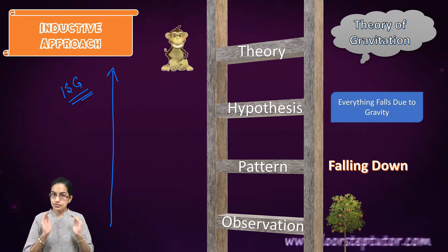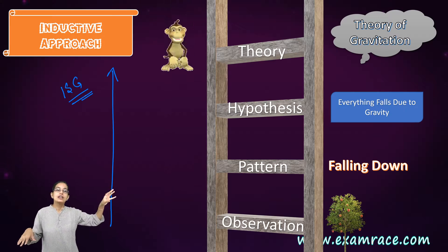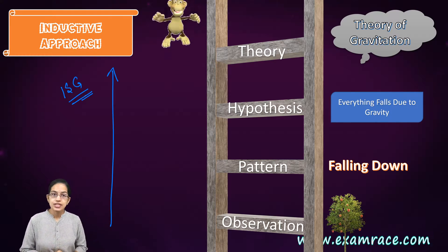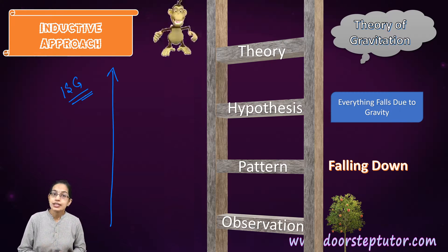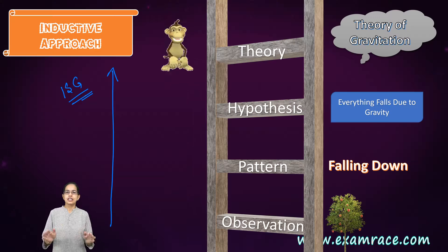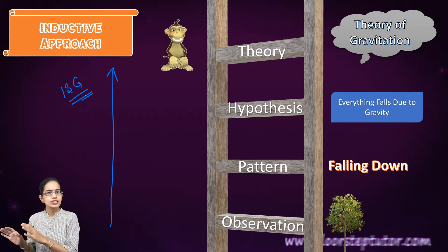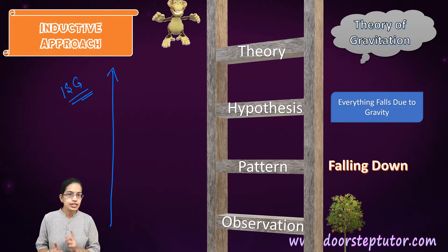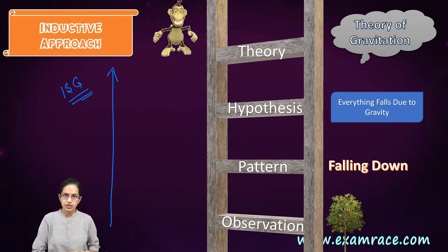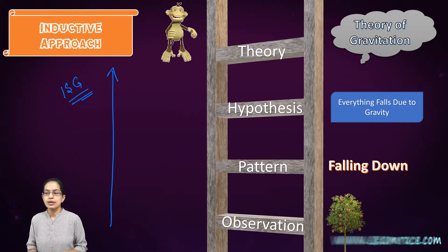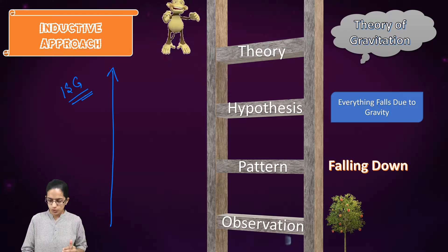With the same example, the deductive approach can work in two ways. Once the theory of gravitation is established through the specific-to-general inductive process, that generalized theory can be applied to other cases — that would be an example of the deductive approach. In certain scenarios, there could also be a case where no prior inductive knowledge was applied and a deductive approach was used directly. Under the inductive approach, the steps are: observation → patterns → hypothesis → theory building.